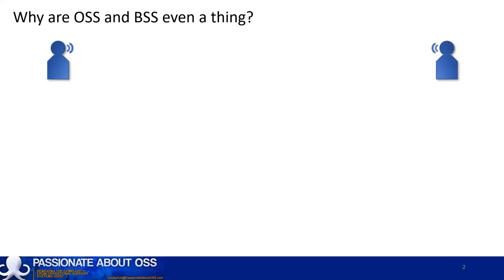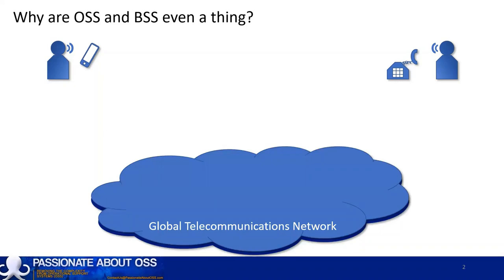To communicate remotely, you first must acquire a device. That device might be a phone, a tablet, a PC or a number of other things. But a device alone doesn't allow communication — it needs to connect to another device or devices. But how do the devices connect? Well that's where one of the most complex and widespread machines on our planet comes in: the world's telecommunications network, a global interconnection of communication networks.